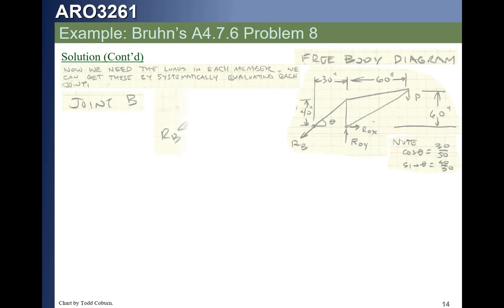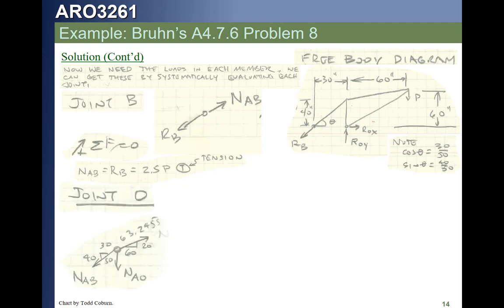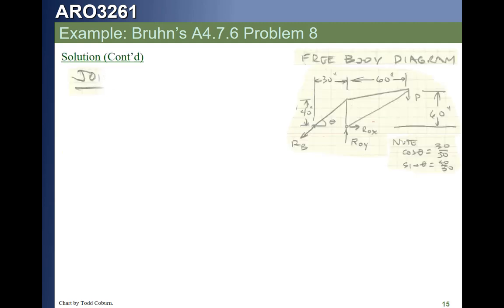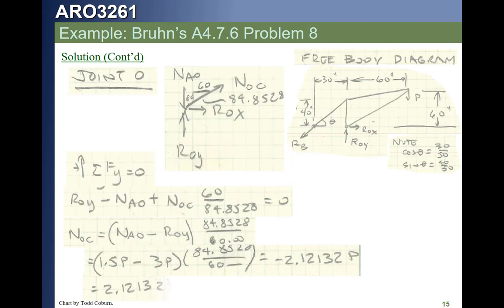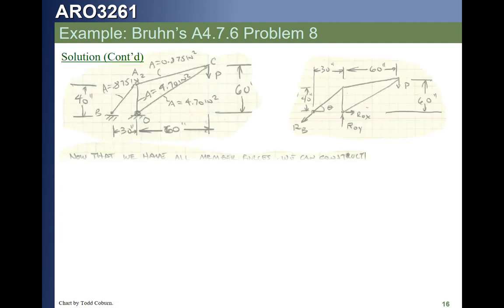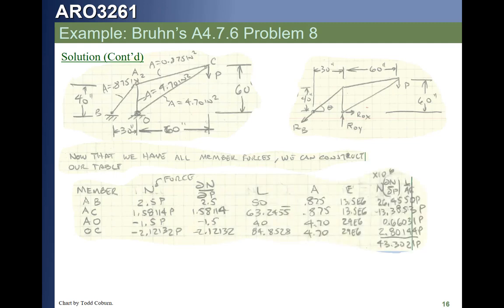Now to get the loads in each member, we can use the method of joints, drawing a free body diagram at each joint, and summing our forces at each joint in each direction until all of the forces in the members are ours. Now once we have all the forces, we are ready to construct our table. We're going to list each member in our leftmost column. We're going to put the force in each member. Remember we left the force P as a variable. So now we know exactly what the force in each member is.